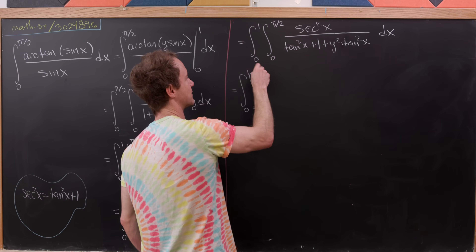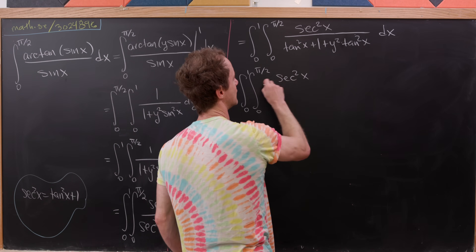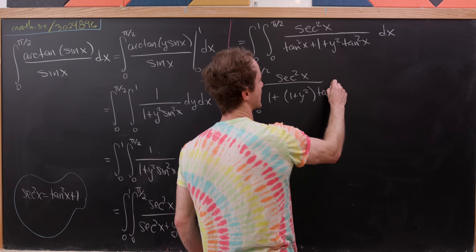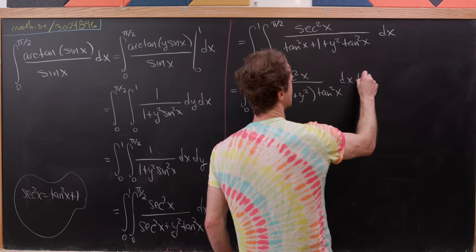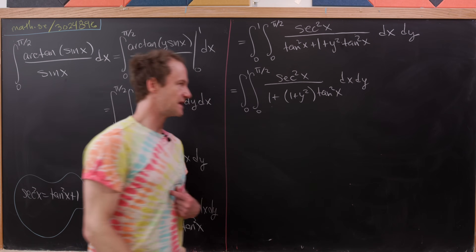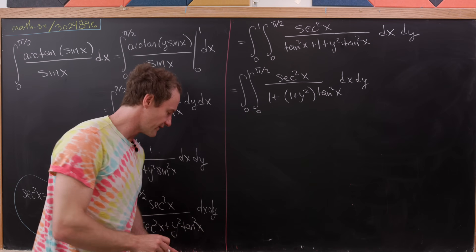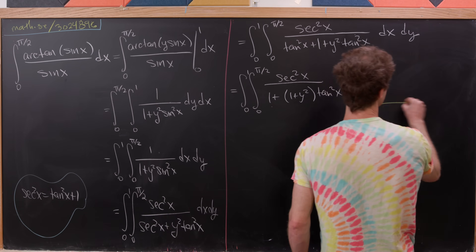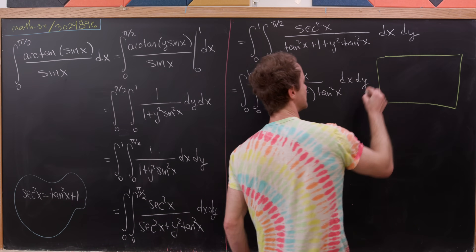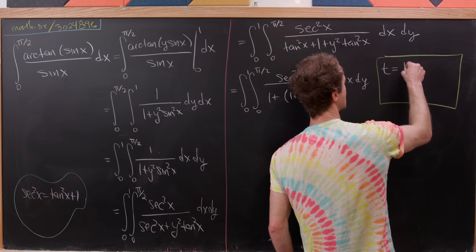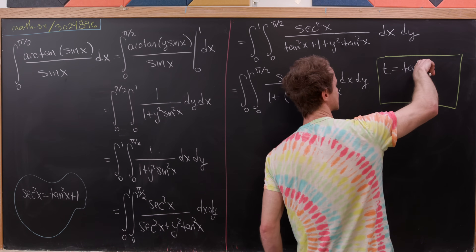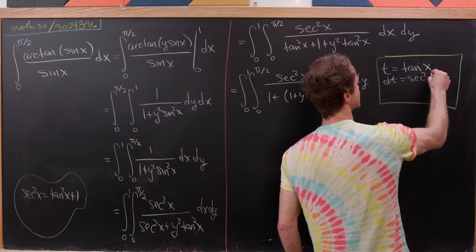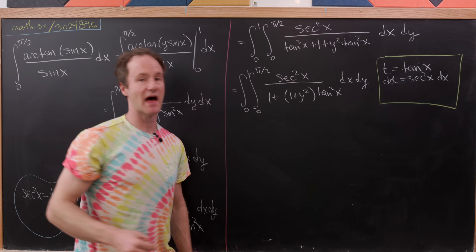So we have the integral from 0 to 1, integral from 0 to π/2, of sec²x over (1 + (1 + y²) tan²x) dx dy. Since the derivative of tan x is sec²x, that motivates the substitution t = tan x, making dt = sec²x dx, which gobbles up the numerator. When x = 0, t = 0; as x approaches π/2 from below, t approaches positive infinity.